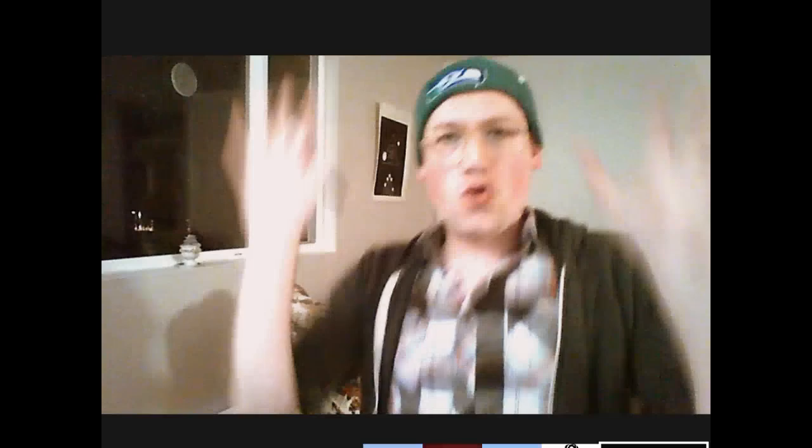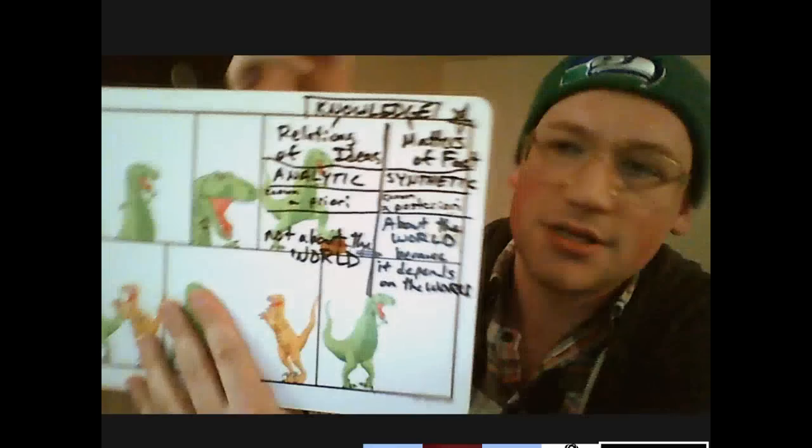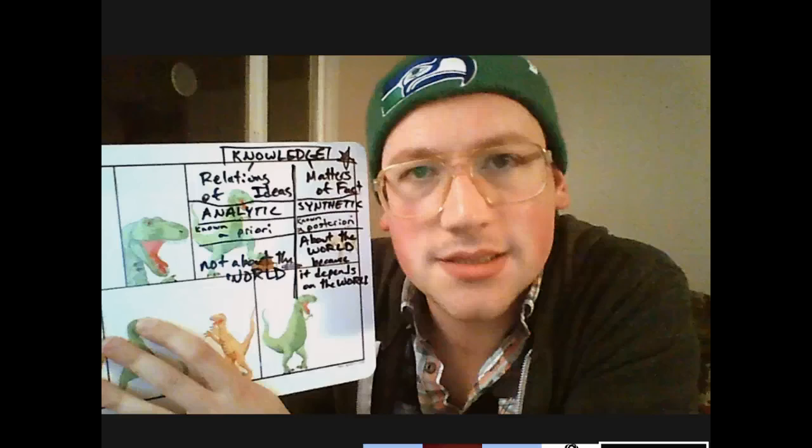Let's get back to what we were doing originally. Hume wants to understand matters of fact — how we have knowledge of this, what our knowledge of matters of fact is based upon, how we can reason about this stuff, how we're supposed to do science. Hume is doing all this philosophical work right in the birth of the scientific revolution in the Enlightenment, the early modern period.